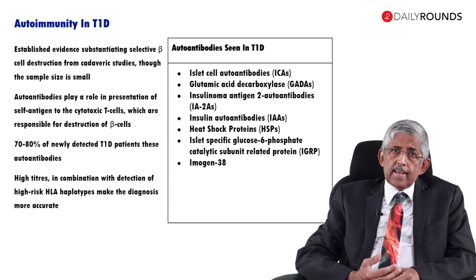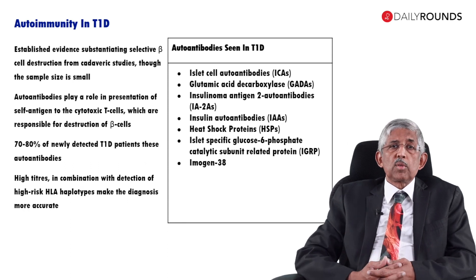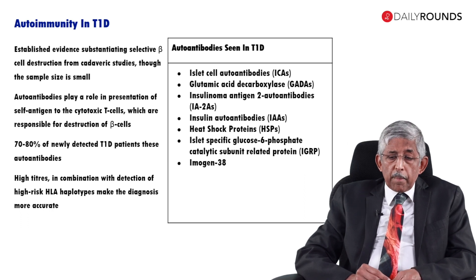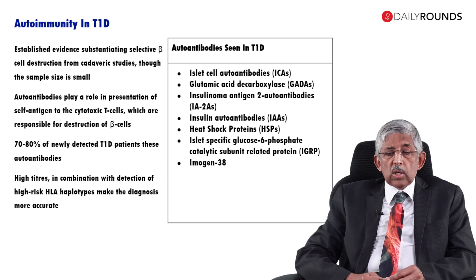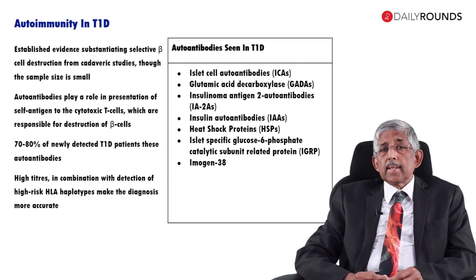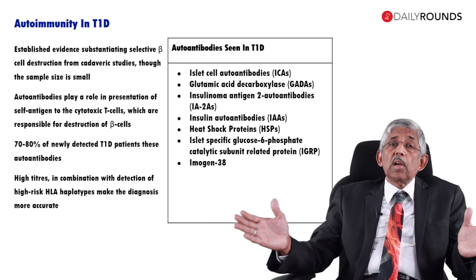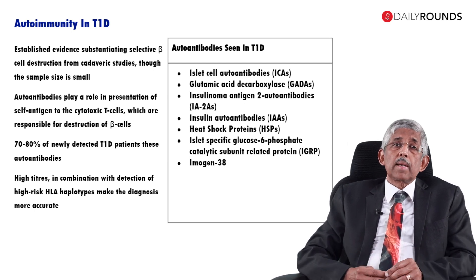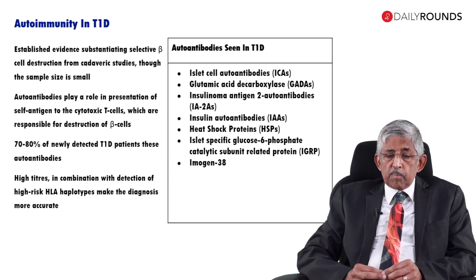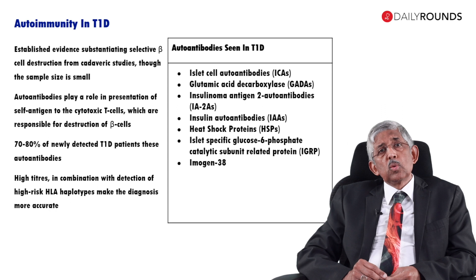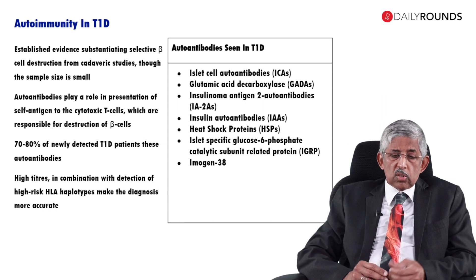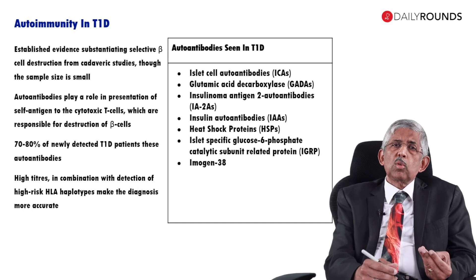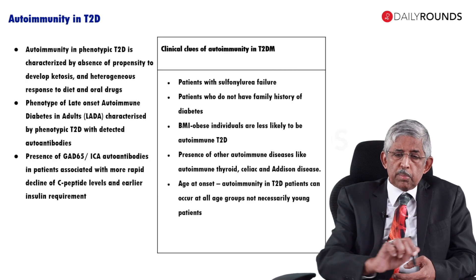A little more detail about auto-antibodies: ICA, or islet cell antibodies, was the first one described, but today it is not being measured because it is very difficult to measure. The most popular is the GAD antibody — glutamic acid decarboxylase — which is measured quite easily and persists for a long time. If you find GAD antibodies in the blood of a child with diabetes, it almost clinches the diagnosis of type 1 diabetes. If you are going to do one test, do the GAD antibody; otherwise, you can also do IA2 and the zinc transporter.